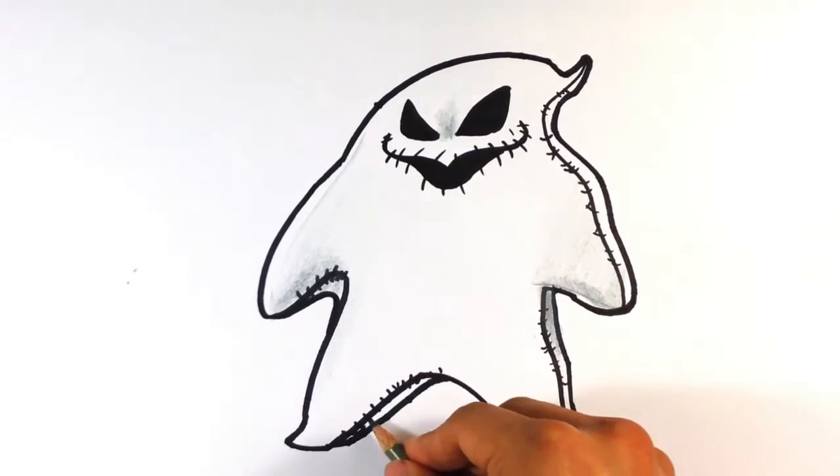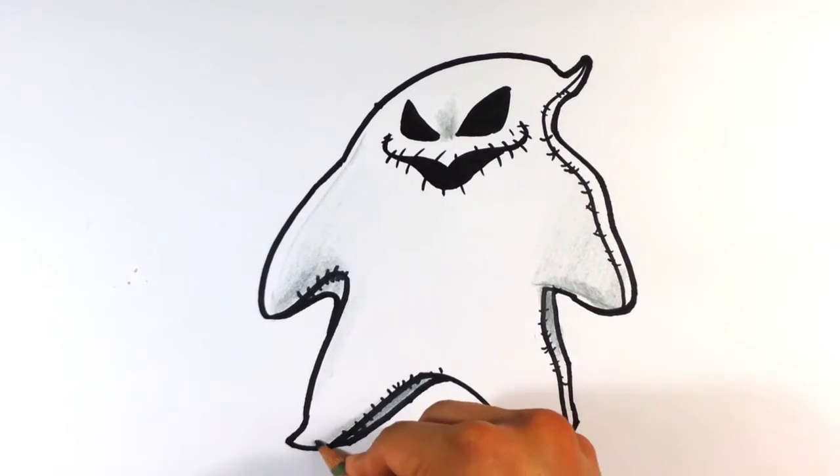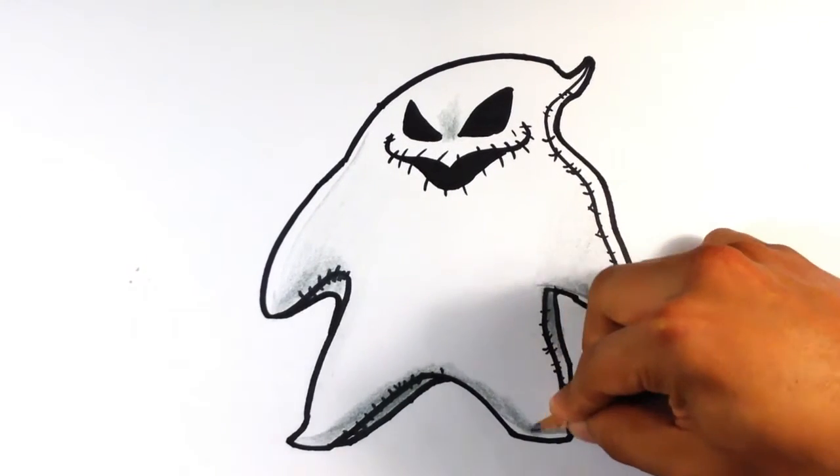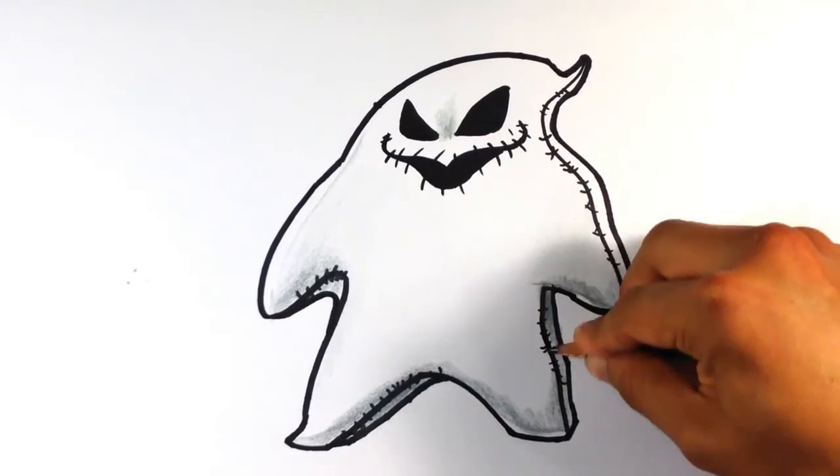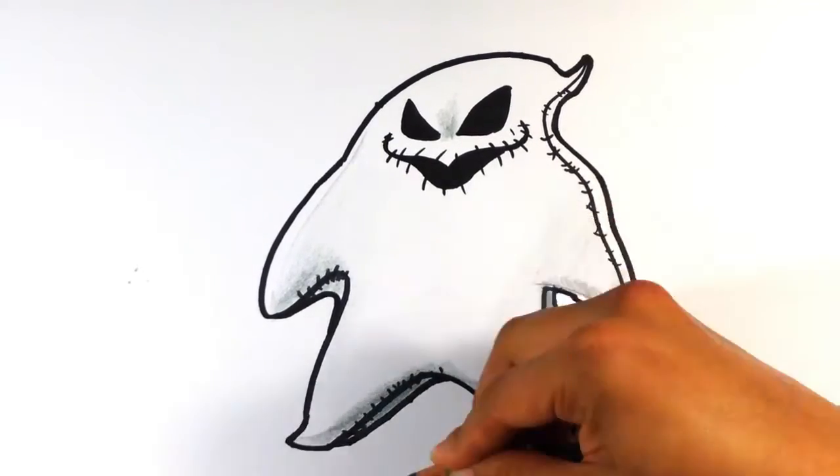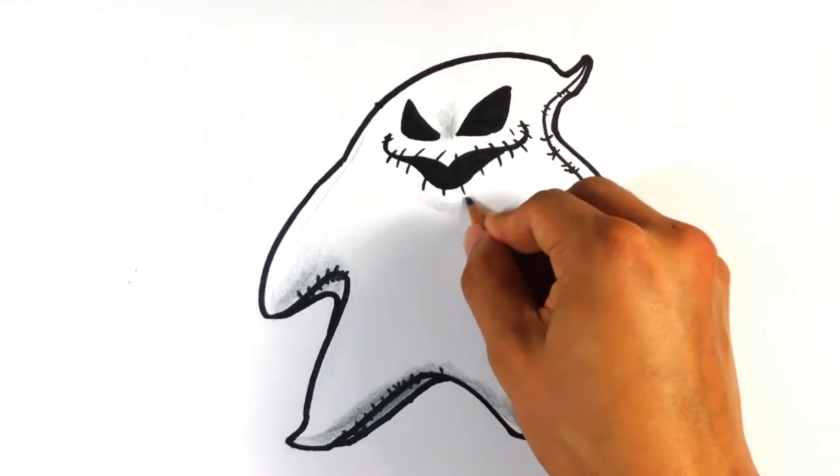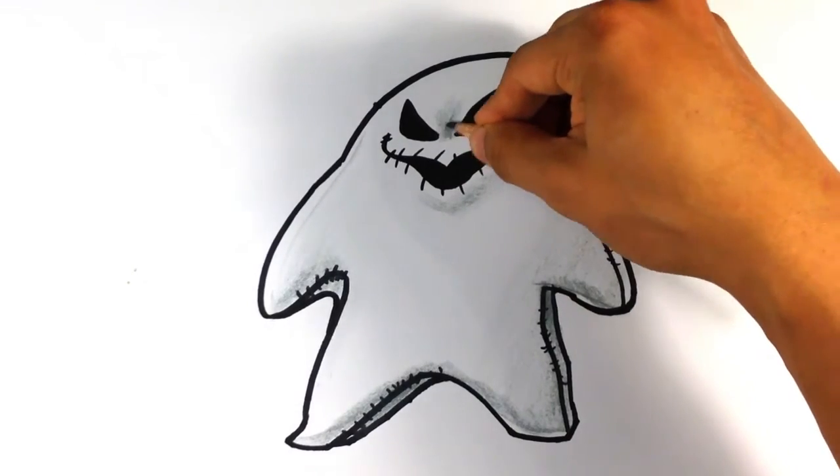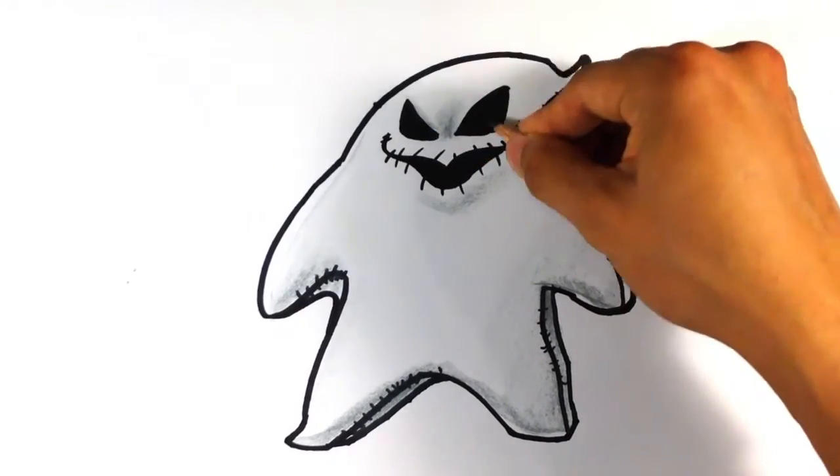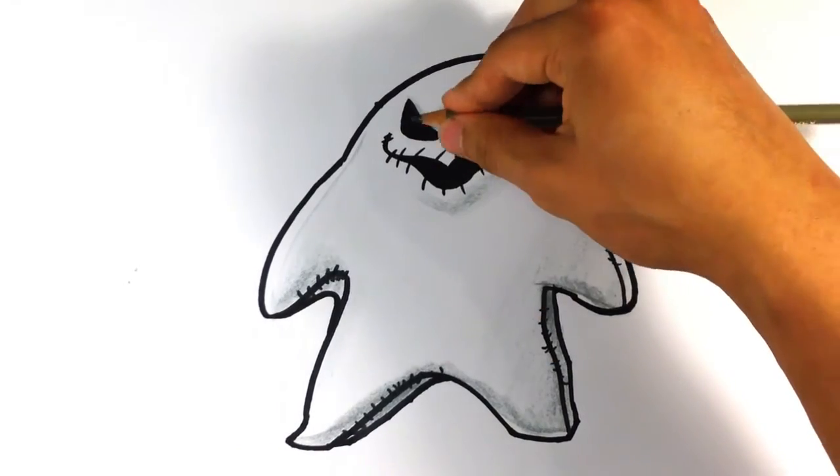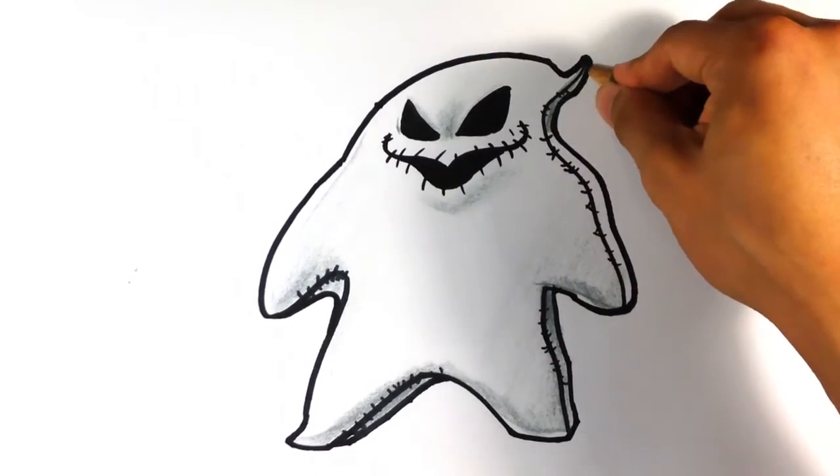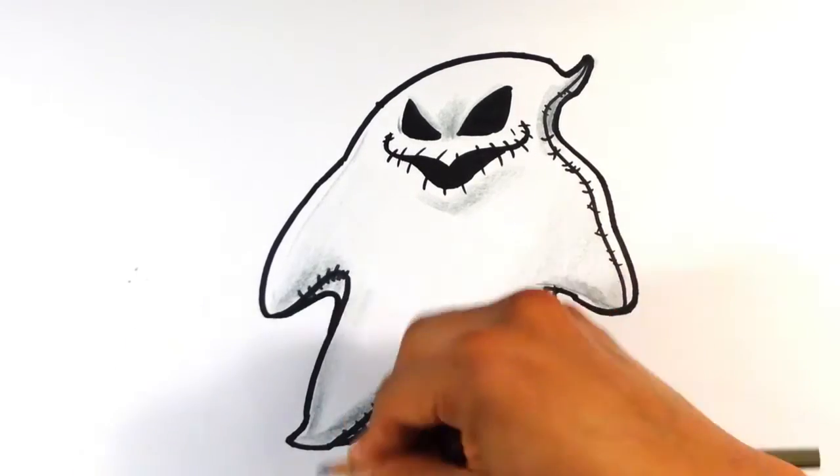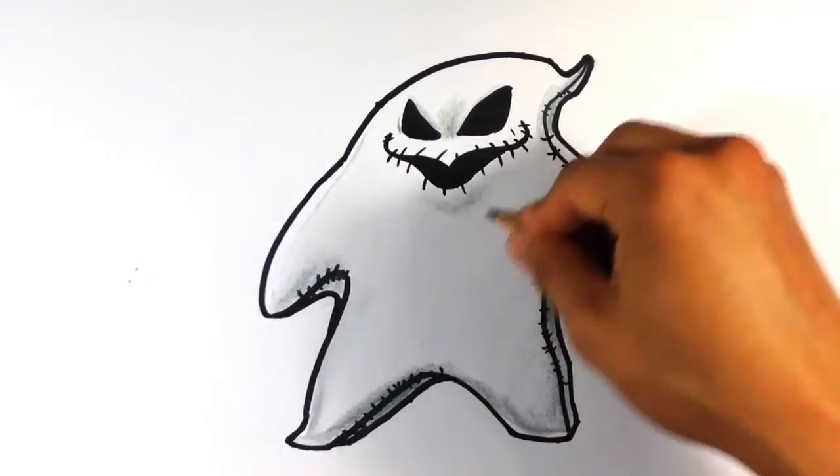I'll darken under the arms, under the leg here. Usually getting some sort of light source. Just kind of fill in the rest, maybe underneath his mouth, right here give him a little bit of a darker, like it's rolling off there. Rolling off the back of his little top of his head.